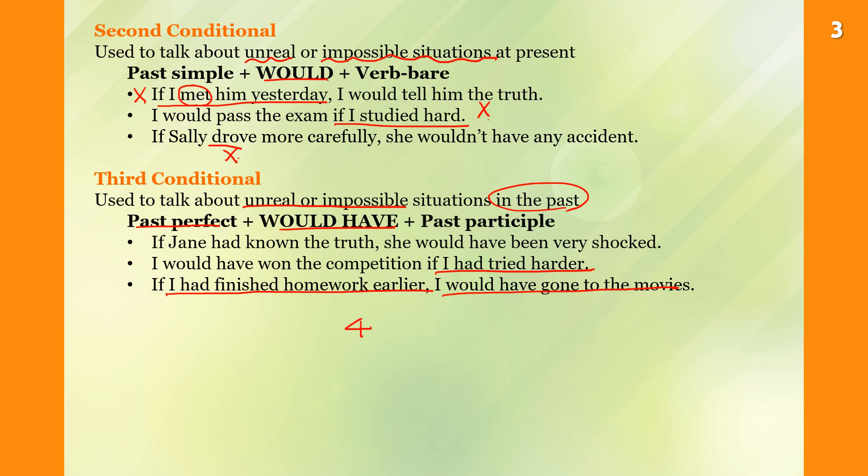There are four conditionals: zero, first, second, third. This is general truth. This is possibility. This is no present with would. And then no past, we would have.